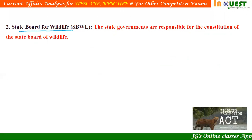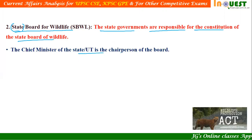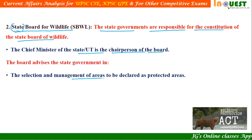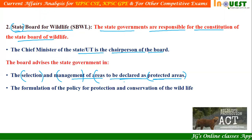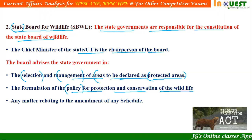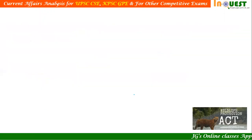The State Board for Wildlife is constituted by the state governments. The Chief Minister of the state or union territory is the chairperson of the board. The board advises the state government in the selection and management of areas to be declared as protected areas, in the formulation of policy for protection and conservation of wildlife, and on any matters relating to the amendment of any schedules.